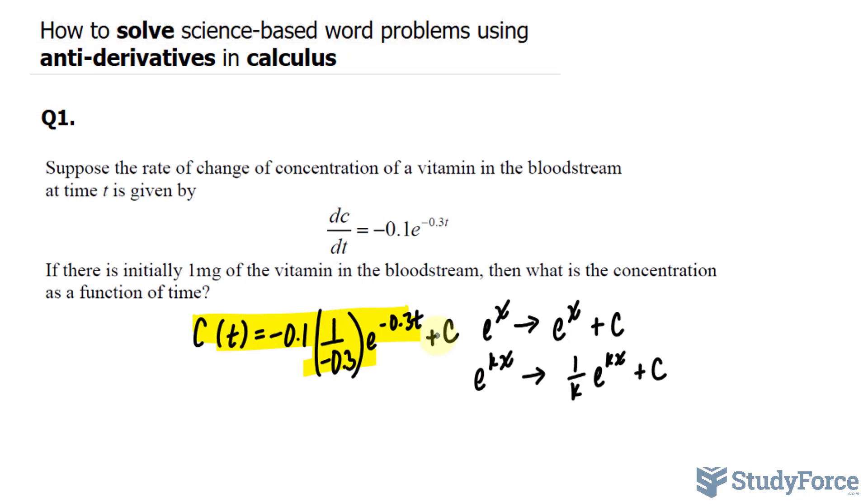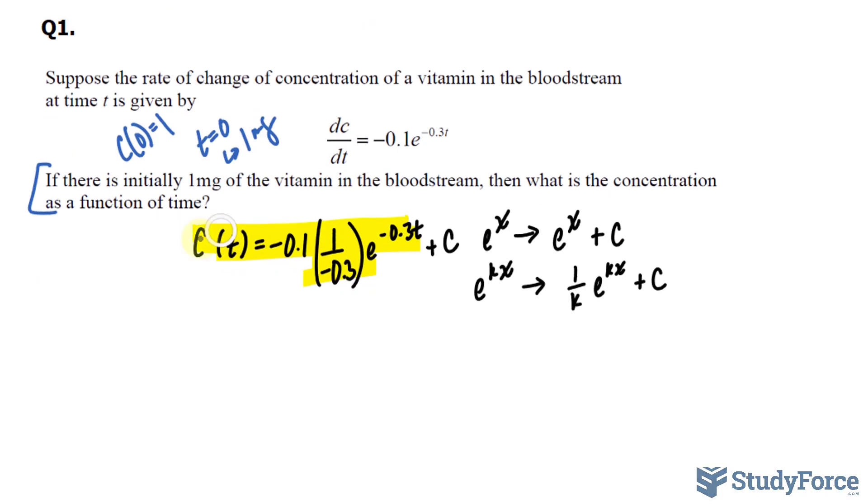So to find c, we need to apply this information to our function. We're told that there is an initial 1 milligram of vitamin in the bloodstream. Initial means that the time at 0 has a concentration of 1 milligram. So c at 0 is equal to 1. I'll apply that to my function. Rather than c of t, I'll write down 1 is equal to negative 0.1 over negative 0.3, e to the power of negative 0.3 times 0. Negative 0.3 times 0 is equal to 0, and anything to the power of 0 is equal to 1, so this whole factor becomes a 1.